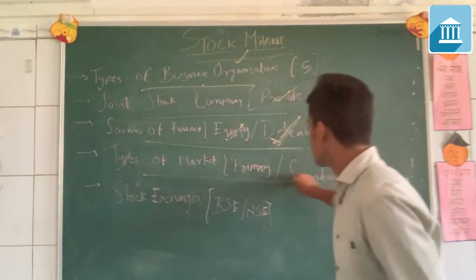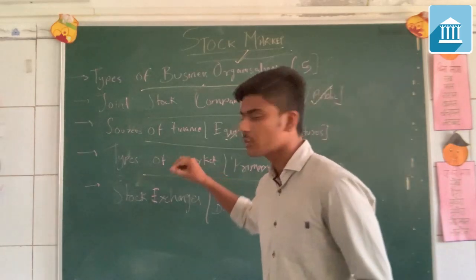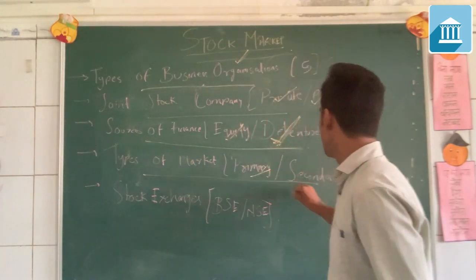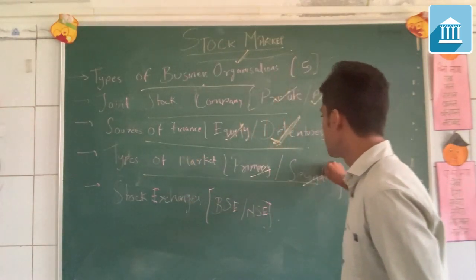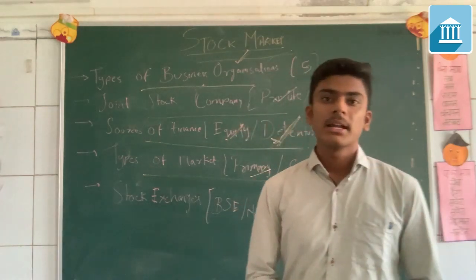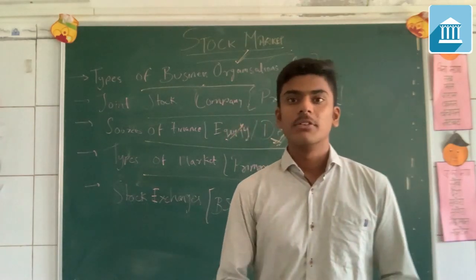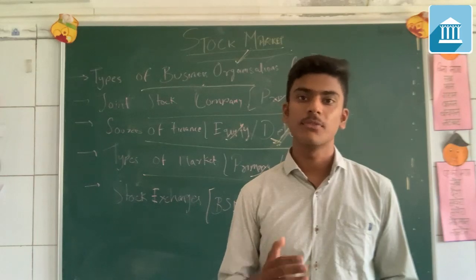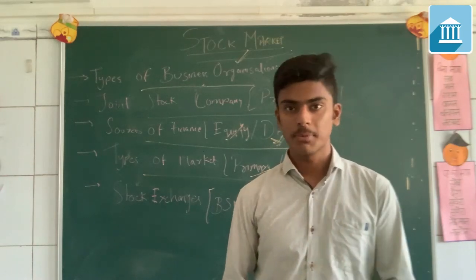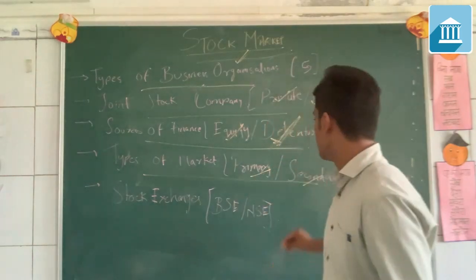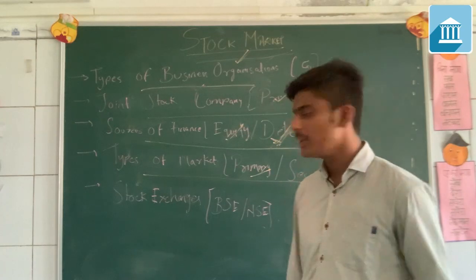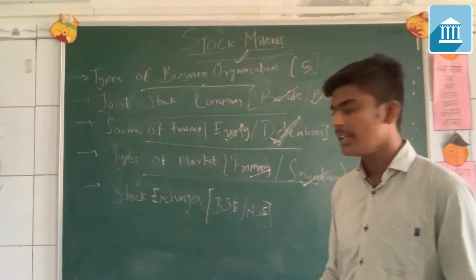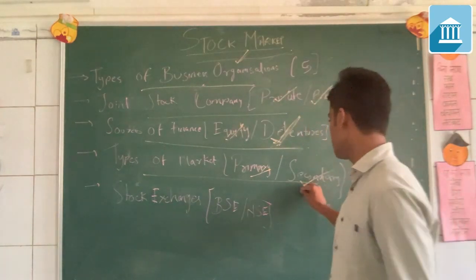There are basically two types of stock market, namely primary and secondary. The primary market is where the company issues its shares for the first time to the general public. After the allocation of shares to the public, the trading of shares starts in the secondary market.